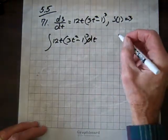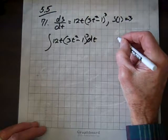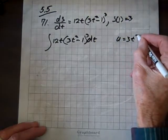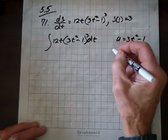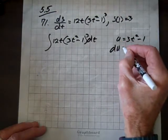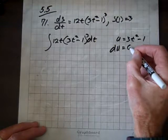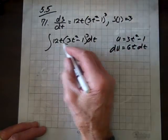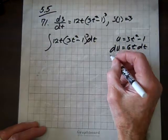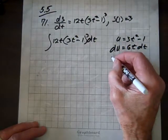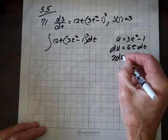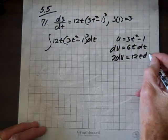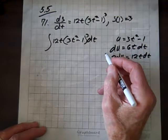And we'll use u-du substitution. So we'll let u equal 3T squared minus 1. So du equals 6T dt. Well, we need, if it was only a 12T. I'll tell you what, let's multiply both sides by 2. So 2 du equals 12T dt. Now we have a perfect fit.